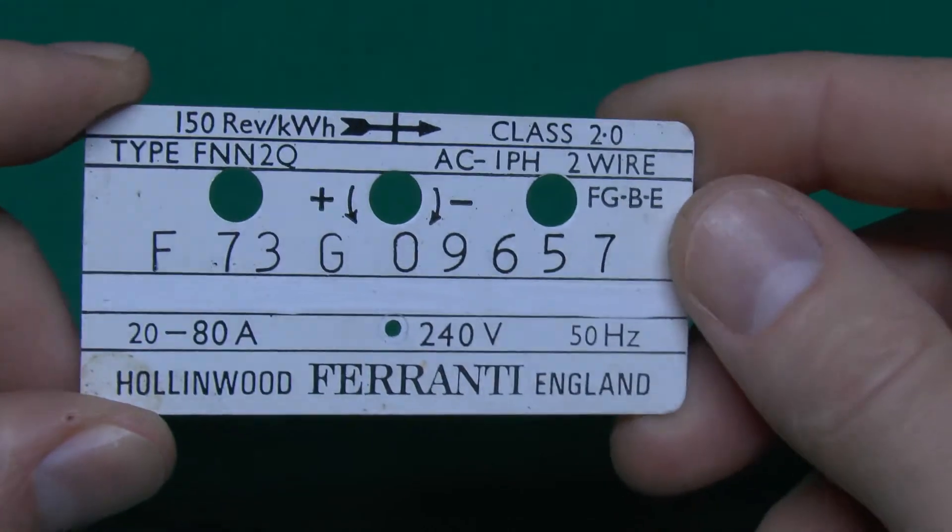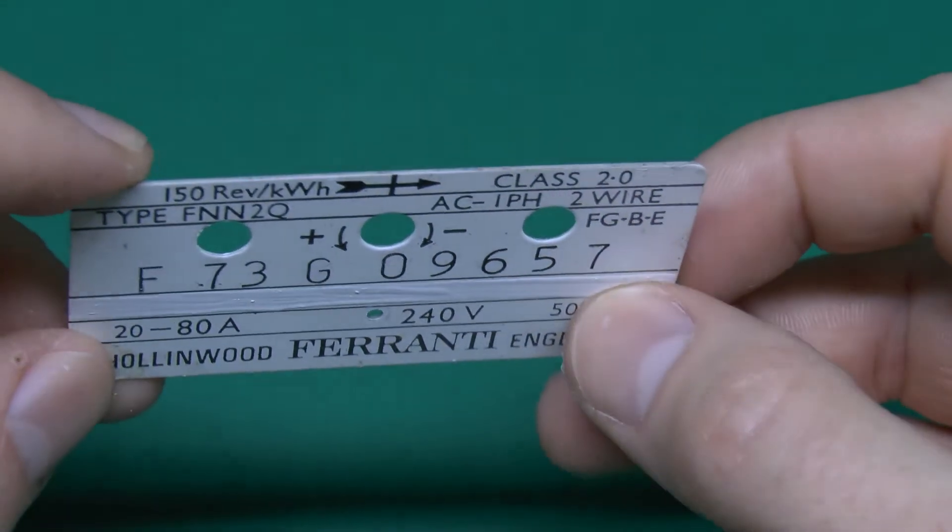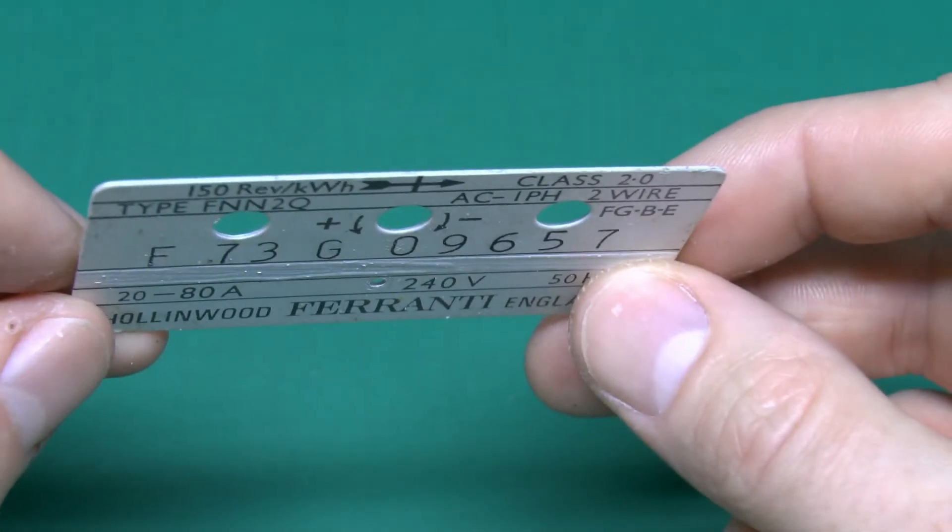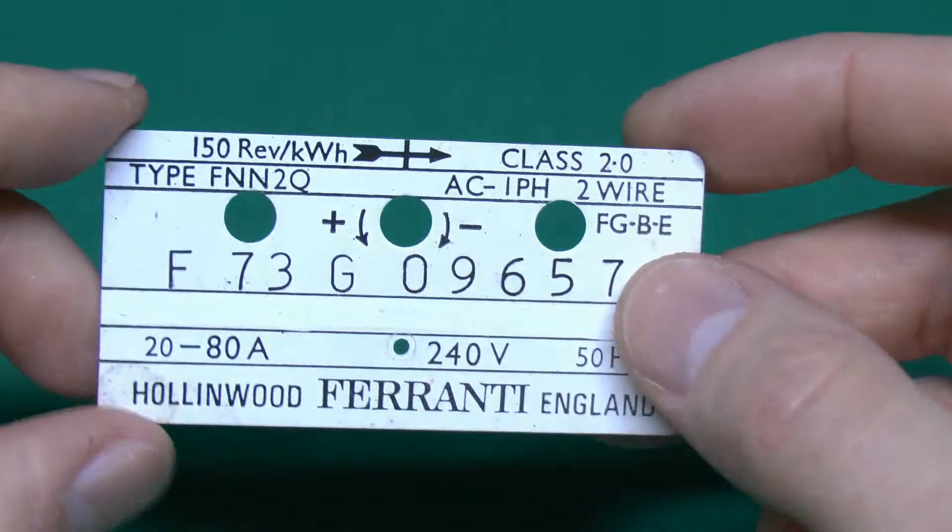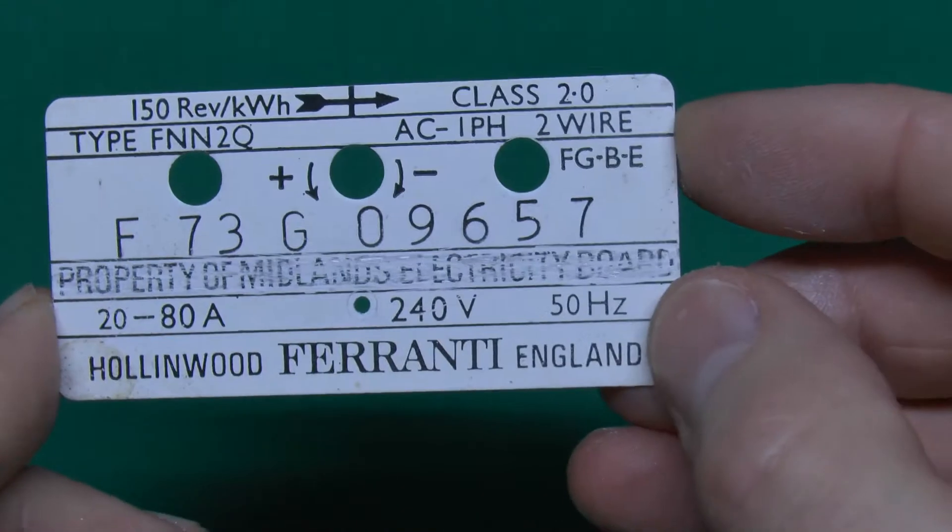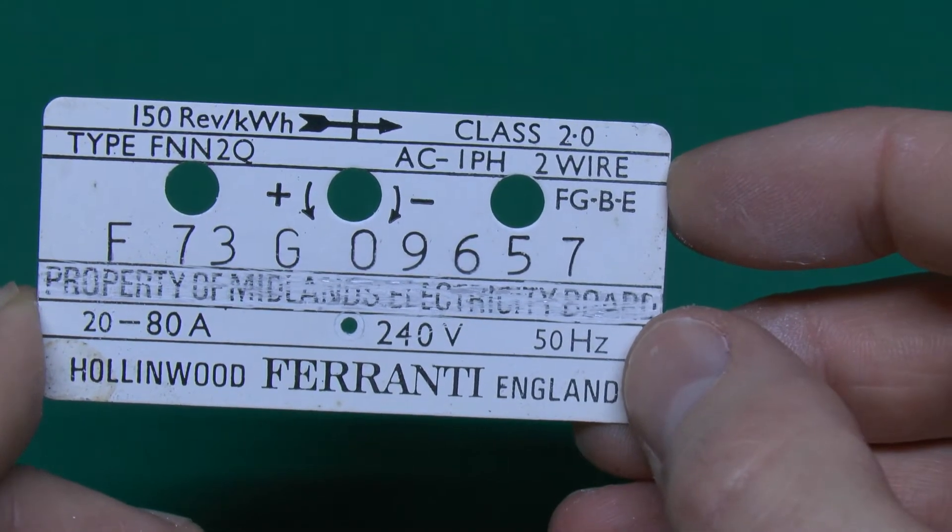And this plate here, in that centre strip, has been painted over to particularly cover up whatever was concealed underneath. I just scratched that paint off, and as you can see, it says Property of Midlands Electricity Board.